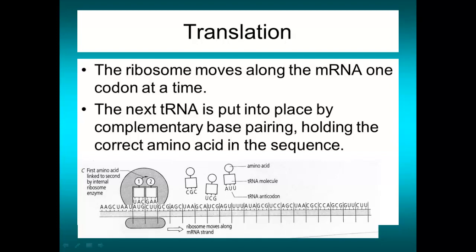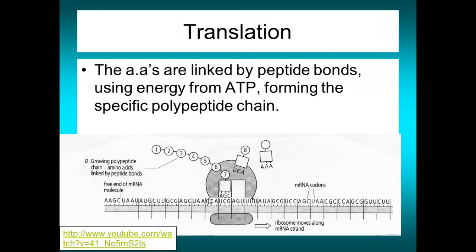Moving on in translation: we had our first tRNA in place, and therefore our first amino acid in place. The ribosome moves along one codon, and the next tRNA slots into the other binding site within the ribosome, bringing an amino acid with it. These two amino acids are linked by a peptide bond, a reaction catalyzed by an internal ribosome enzyme that also requires ATP as an energy source. The chain grows one amino acid at a time.